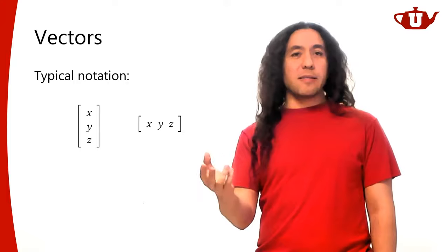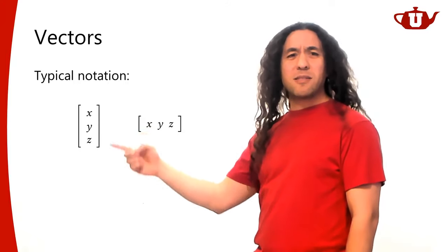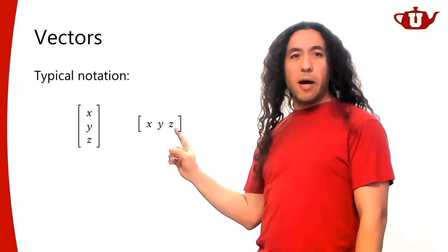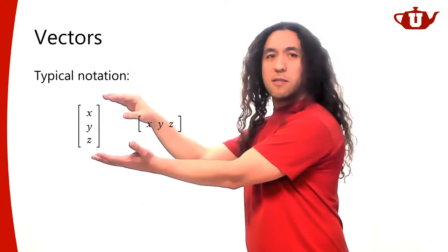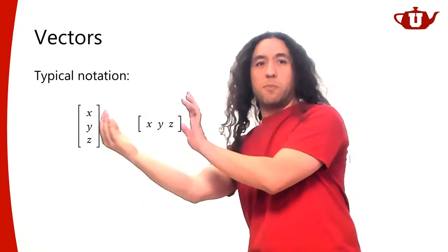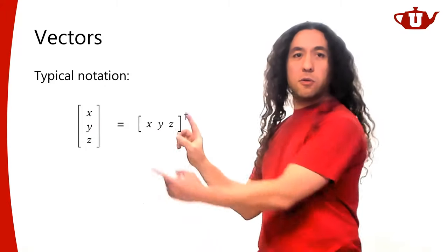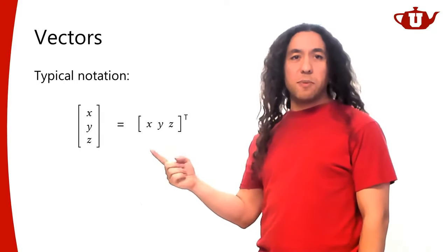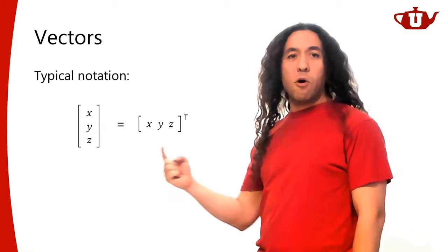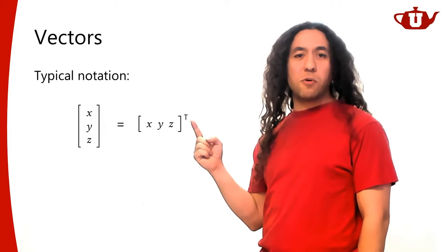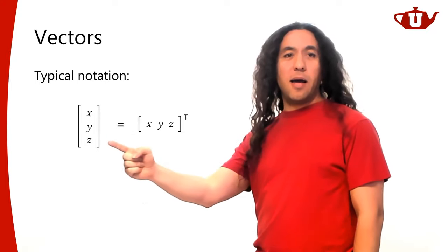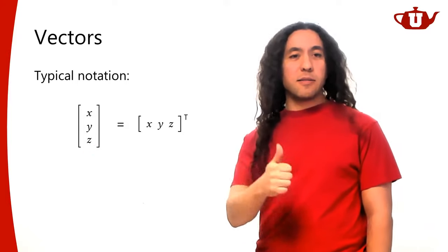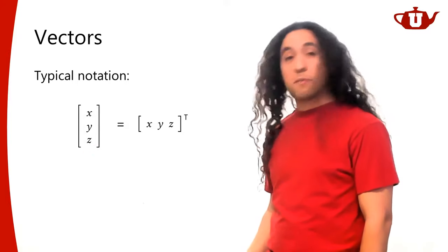Sometimes when writing in text, a column vector doesn't look nice because it sticks out of the line. So we can take the vector and transpose it — a column vector is equivalent to its transpose written horizontally. Whenever I write vectors in row format, you'll see this transposed notation. Column vector is the standard we pretty much always use in graphics.